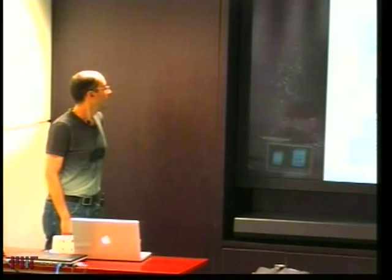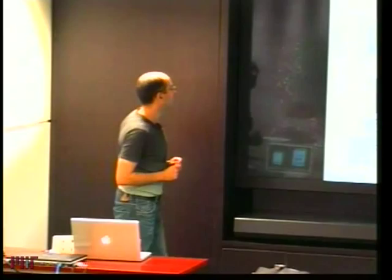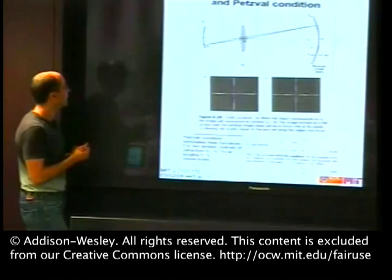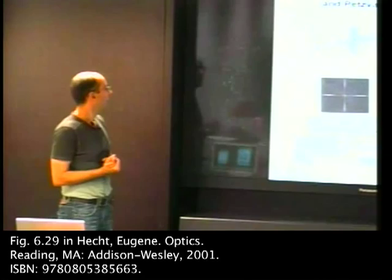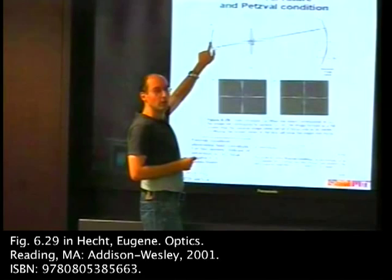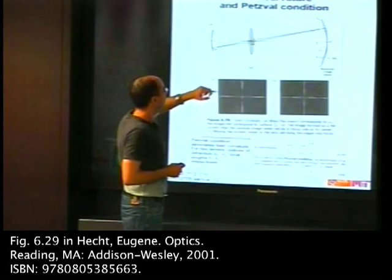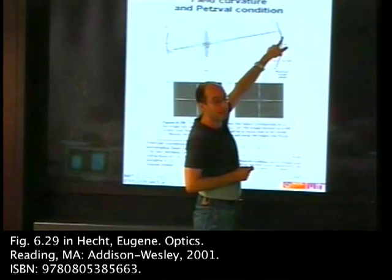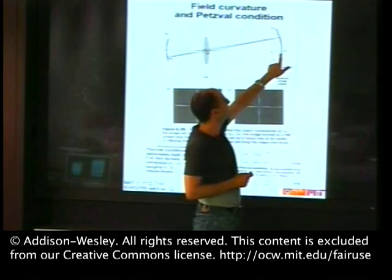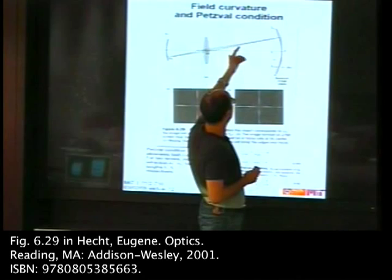A related aberration is curvature of field, which is easy to understand. If you derive the imaging condition for a point on axis and then go off axis, the image may not necessarily focus on the same plane. What this aberration is about is that the image comes to focus on a curved surface centered on the optical axis.